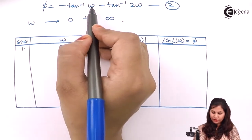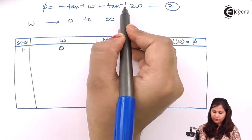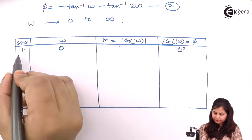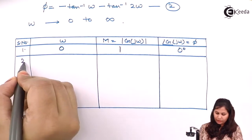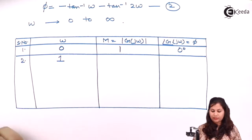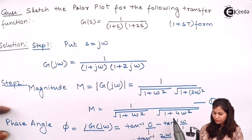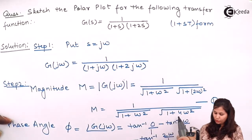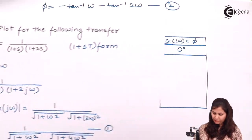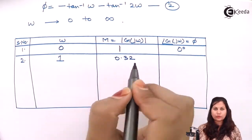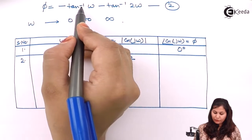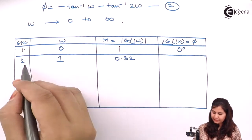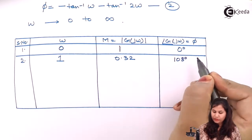Putting ω = 0 into the phase angle equation: −tan⁻¹(0) − tan⁻¹(0) = 0 degrees. Now taking ω = 1: the magnitude is 1/(√2 · √5) = 0.32. The phase angle is −tan⁻¹(1) − tan⁻¹(2), which comes out to −108 degrees.